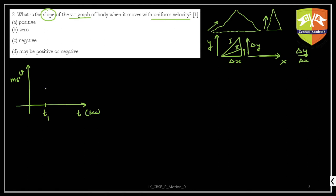Let's say at t equals t1 the particle is moving with velocity v1, and at t equals t2 the particle is moving with velocity v2. Here t1 is the start time and t2 is the end time — like 12 o'clock and 12:30. The train was moving with some speed at t1 and some other speed at t2.